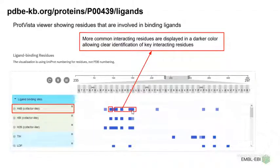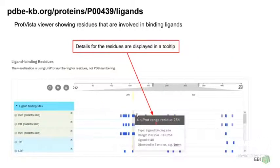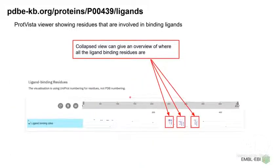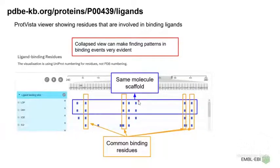There is a color gradient, and the more consistent the interaction is, the darker it is in color. This allows a user to clearly identify the key interacting residues. If you hover over a residue, a tooltip shows the residue details and the entries in which they are present. If you collapse the ligand binding section, you can see the overall ligand binding residue overview, and this collapsed view can also help in finding patterns in binding events.